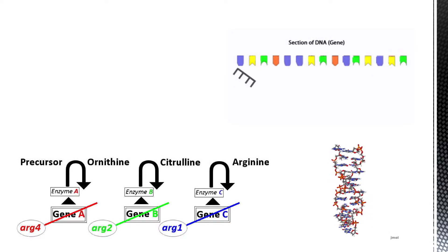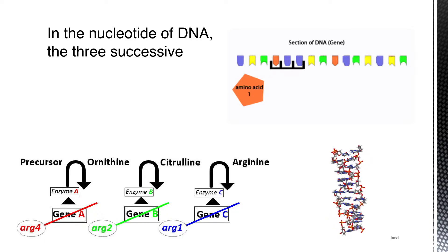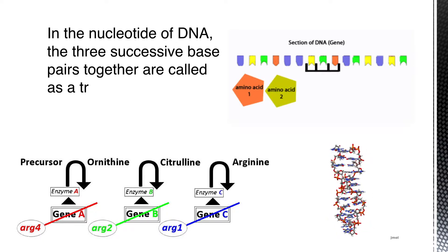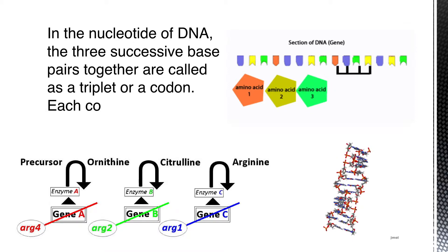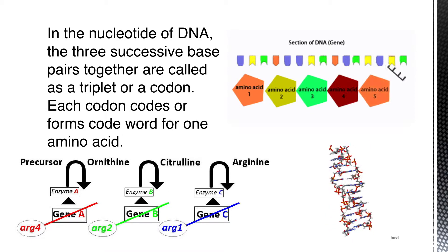In the nucleotide of DNA, the three successive base pairs together are called a triplet or a codon. Each codon codes for one amino acid.